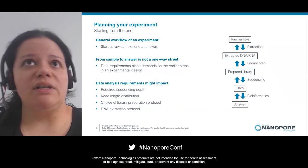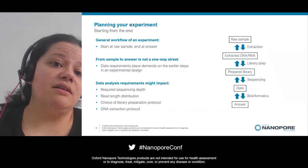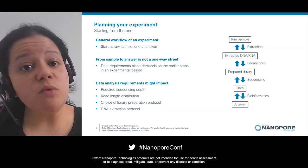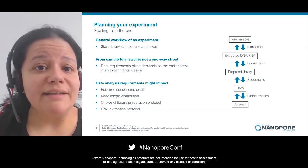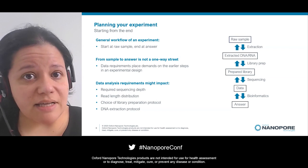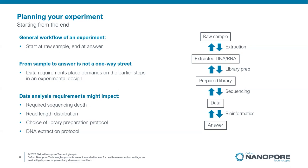For instance, if you want to do an assembly and generate really long data, you need a library preparation method that allows really long fragments, an extraction method that provides those long fragments, and a well-preserved sample that is not degraded. You need to think about not just the read length distribution but also the sequencing depth — how much data you need to generate — and all of that will have an impact on library preparation and extraction.